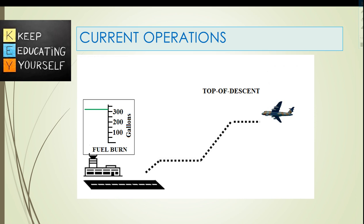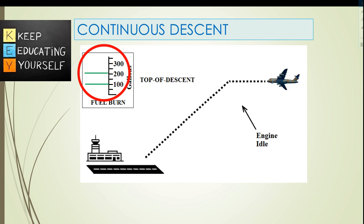In a conventional non-CDA approach, the aircraft descends stepwise with portions of level flight in between. The reasons for step descent are due to coordination procedures, airspace design, or traffic. As per the fuel burn chart, 300 gallons of fuel is consumed in step-down conventional descent methods. By performing a CDA, the aircraft remains higher for longer and operates at lower engine thrust.